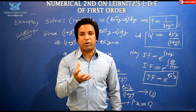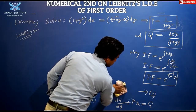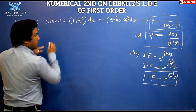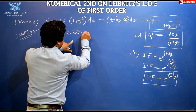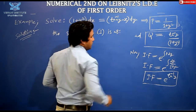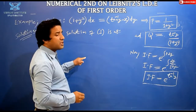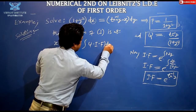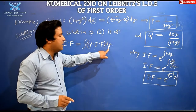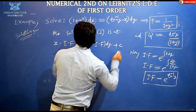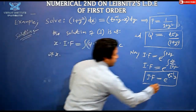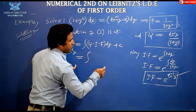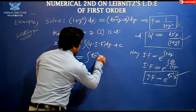Now we write the solution. The solution of the given equation is: x · (IF) = ∫ Q · (IF) dy + c. Substituting: x · e^(tan⁻¹y) = ∫ [tan⁻¹y / (1 + y²)] · e^(tan⁻¹y) dy + c.